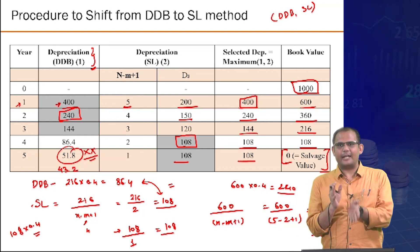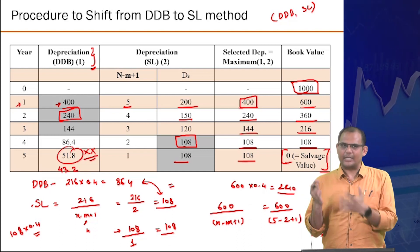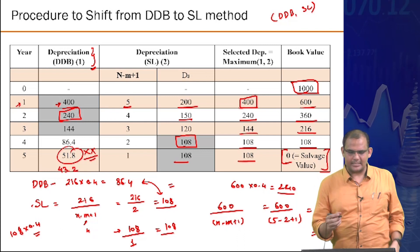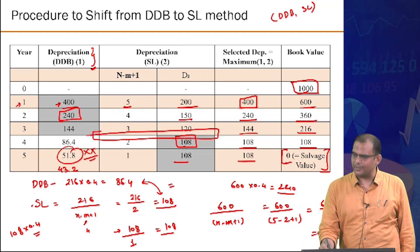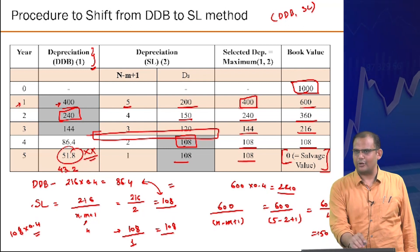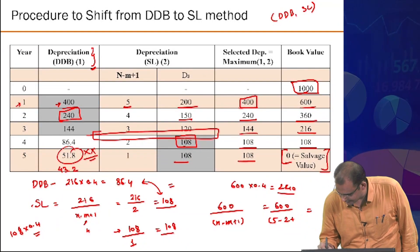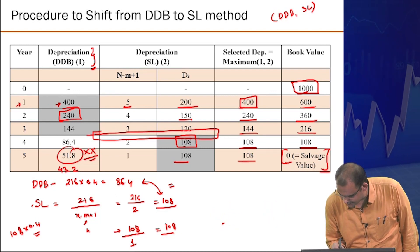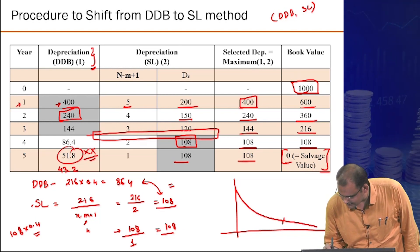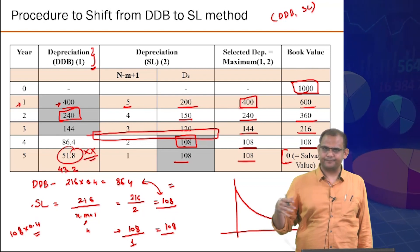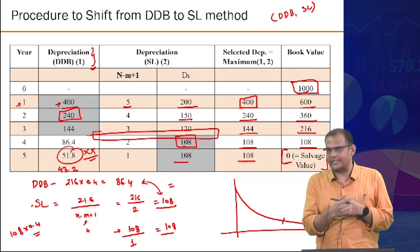Summary: switching happens at year 4, and by combining DDB in the early years with straight line in the later years, you reach the salvage value while maximizing the present worth of total tax benefits. Plotting this gives a steep DDB curve early on followed by a linear portion — this combined approach gives the maximum net present worth of the tax benefit cash flow series.